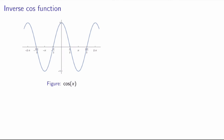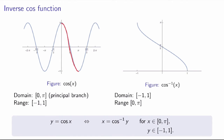Let's now look at the cosine function. Again, the cosine function is not one-to-one — it's periodic — so we need to define its principal branch to be able to define the inverse cosine function. The convention in this case is to choose the principal branch to be between 0 and pi, over which the function is clearly one-to-one. The range is still minus one to one. The inverse cosine function is obtained by reflecting the branch about y equals x. The domain and ranges are exchanged, and the statement is that y equals cosine of x if and only if x equals inverse cosine of y, for x in the principal branch and y in the range of the cosine function.